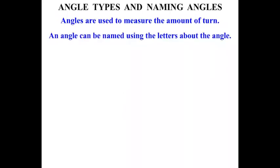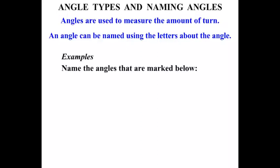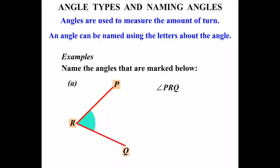Now an angle can be named using the letters about the angle. We're asked to name the angles that are marked. For the first one, we've got an angle mark and a few letters around it. We can name this as Angle PRQ — starting from P towards R and then to Q, tracing the angle out. Or we could name it as Angle QRP — starting at Q, towards R, and then towards P, tracing the angle out again.